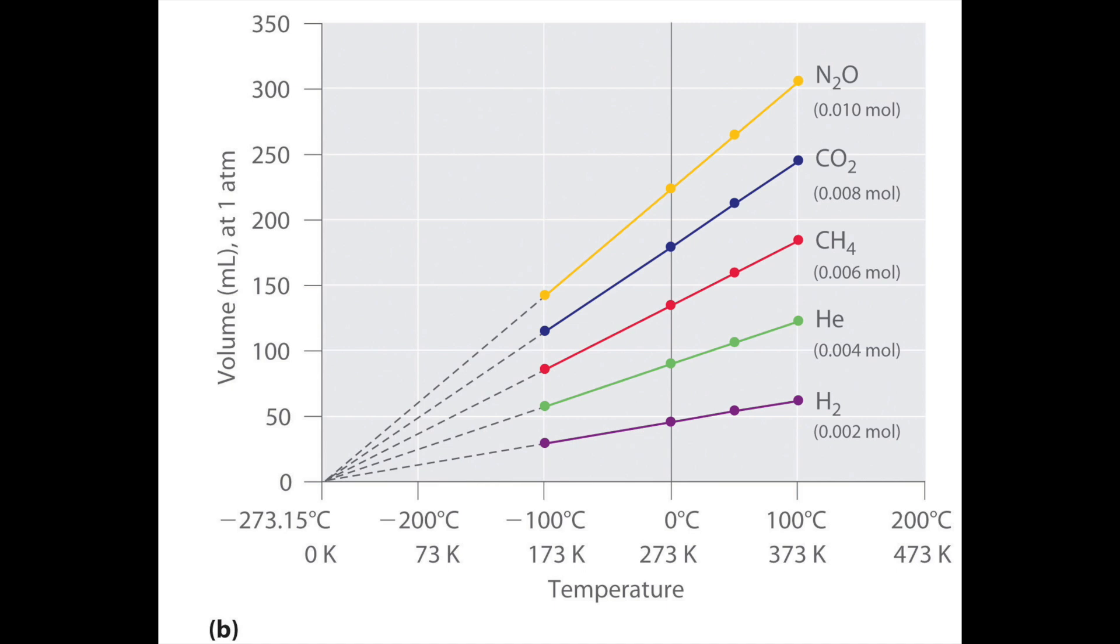As they extrapolated this data, they saw that the slope was constant and that the y-intercept was always negative 273.15 Celsius or 0 Kelvin. This is a theoretical condition because a gas cannot occupy zero volume.